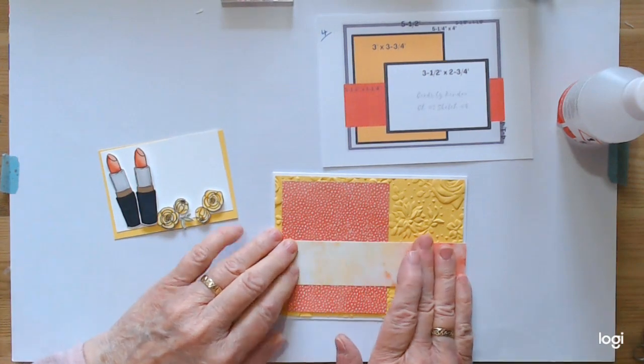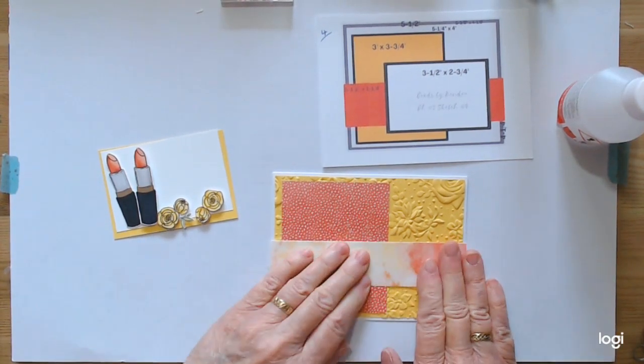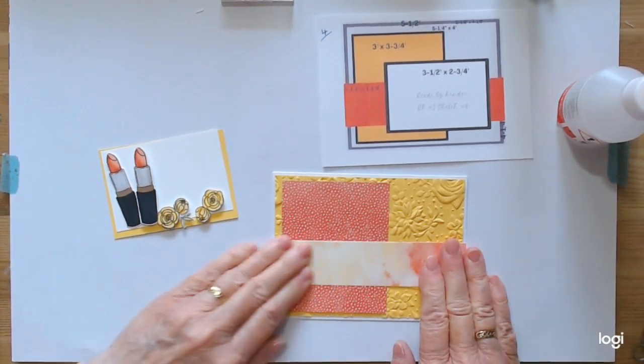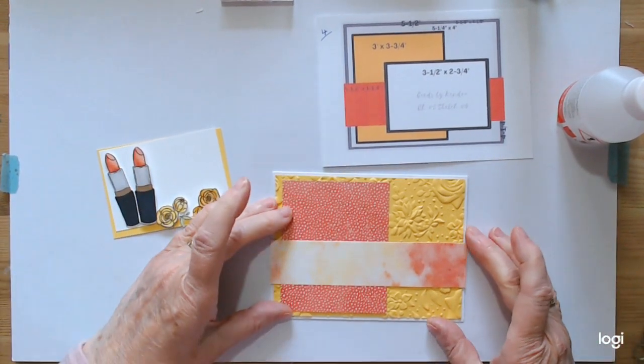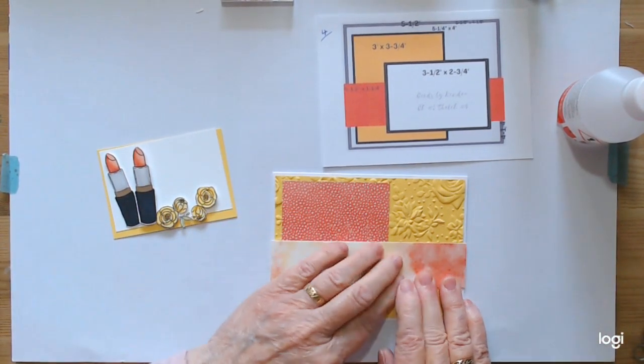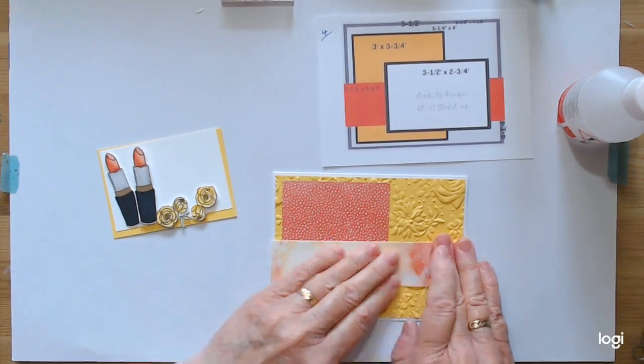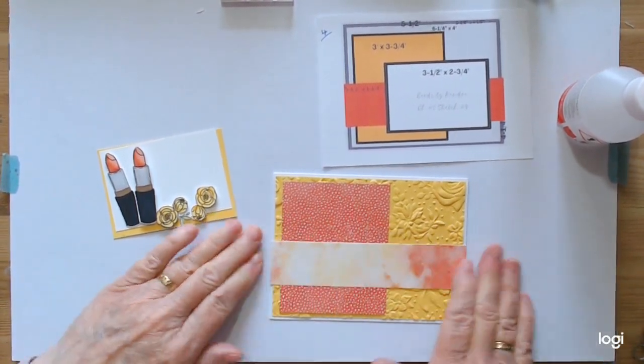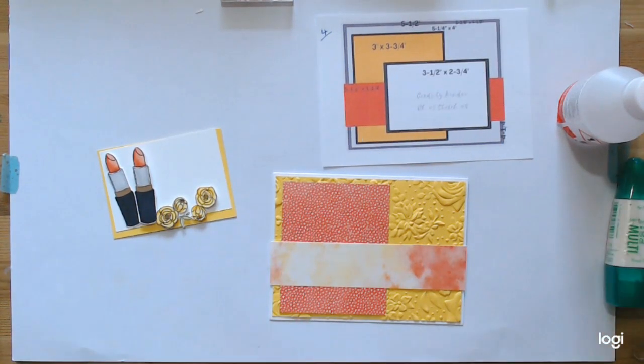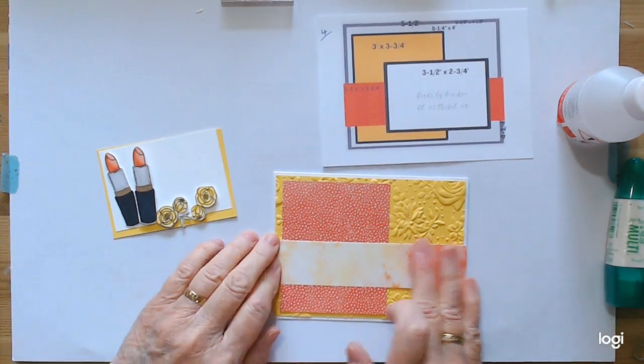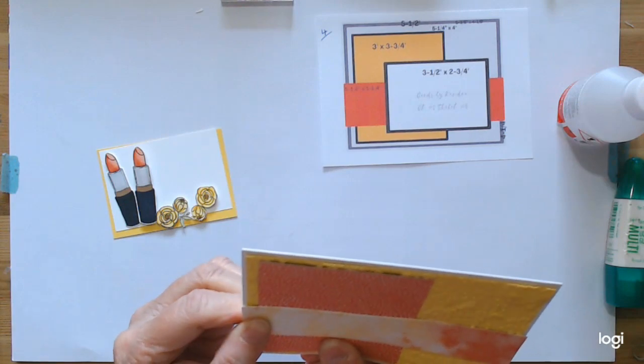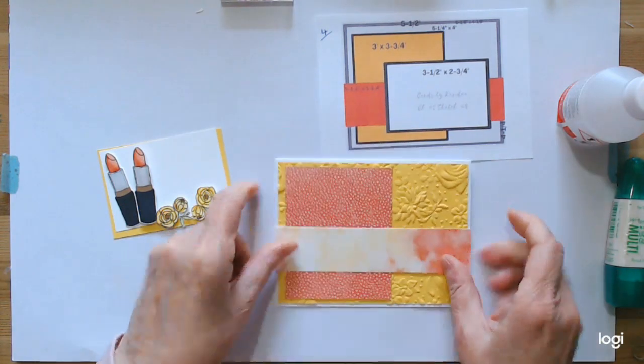I'm just making sure it's straight. This embossing folder is tricky. It just needs a wee bit of time to take because you could use your Tombow glue or tape which stick quicker. Though this is generally good, just make sure it's straight.